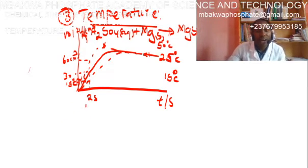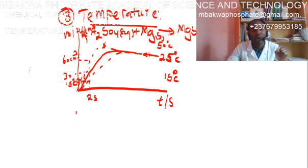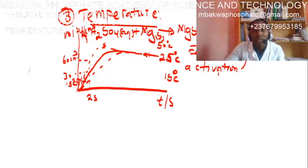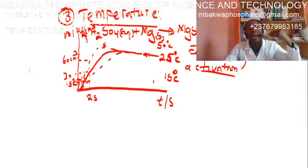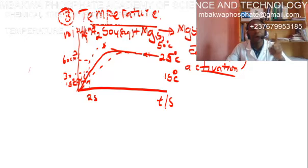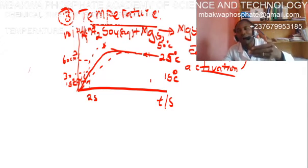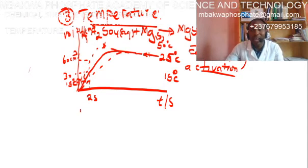When you increase the temperature, the number of reacting molecules that will react with energy equal to the activation energy EA increases. The activation energy is not changed, but more particles now have energy equal to or greater than the activation energy. This is the reason why increasing temperature increases the rate of reaction.